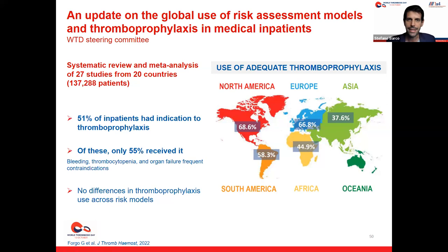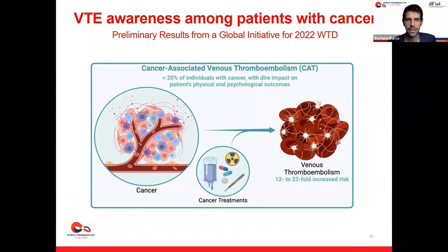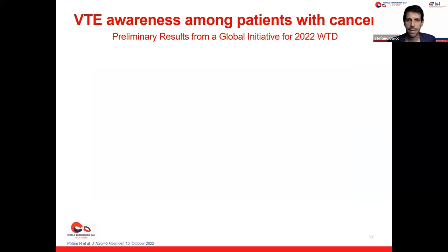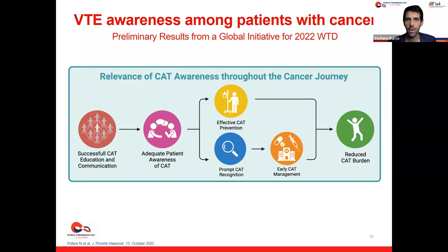We then sought current data on appropriate thromboprophylaxis use in medically ill patients. After 2008, checking more than 27 studies with more than 130,000 patients, we showed that out of patients with a formal indication for thromboprophylaxis, only 55% received it — somewhat better than 20 years ago, but still unsatisfactory considering the main contraindications were only minor. There was a striking difference in thromboprophylaxis use across countries and continents. One of the most fragile groups is cancer patients, among whom 20% of those living with cancer will experience a VTE during their life, and 20% of all VTE patients have cancer.